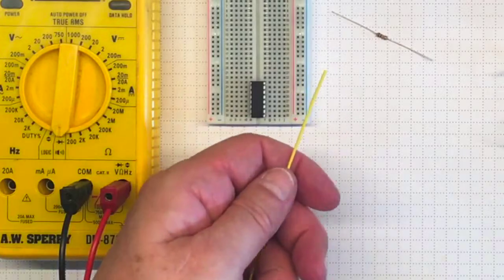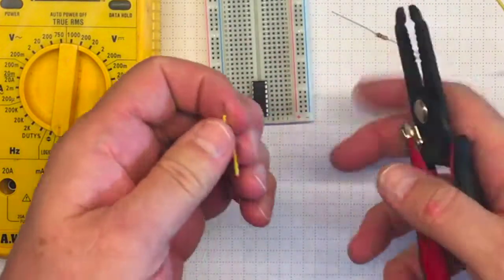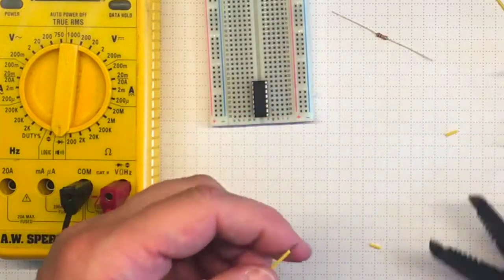I can make my connections a little more permanent by using hookup wire like this and stripping the ends then pushing it into the holes in the breadboard.